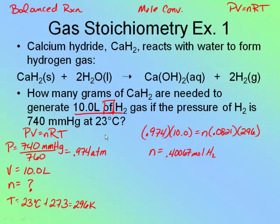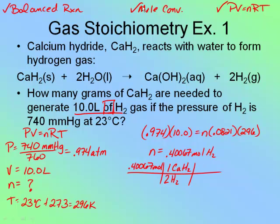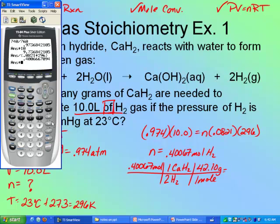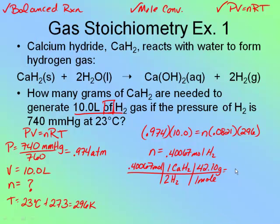I don't want moles of hydrogen or grams of hydrogen — I want grams of calcium hydride. So now I do my stoichiometry. I've used PV = NRT, I'm using the balanced chemical equation — check. From the equation, there are 2 moles of hydrogen for every 1 mole of calcium hydride. Then I do the mole-to-gram conversion: 1 mole of CaH₂ = 42.10 grams. So 0.40067 × 42.1 ÷ 2 = 8.43 grams of calcium hydride.